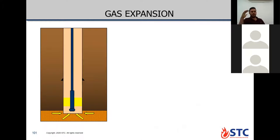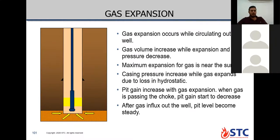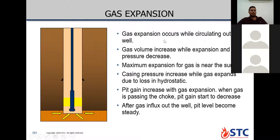Now we're going to talk about gas expansion. Gas expansion is much better for us as wells engineers or petroleum engineers. According to Boyle's Law P1V1 = P2V2: once we allow expansion, V2 will be greater than V1 — your volume will increase. As volume increases, pressure will decrease. We keep bottom hole pressure away from fracturing pressure. Gas expansion occurs while circulating out of the well — gas volume increases with expansion, so pressure decreases.